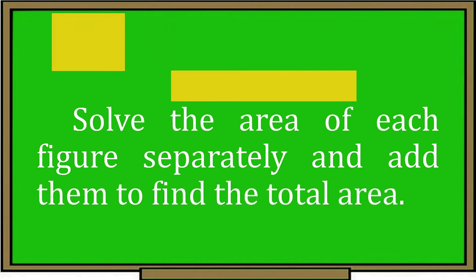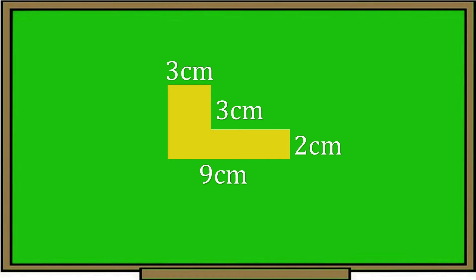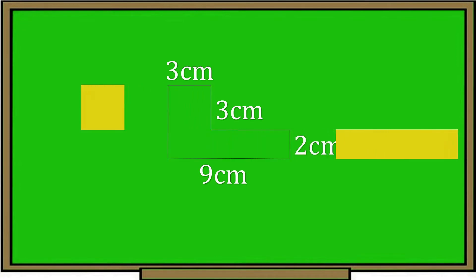Let's try this example. Find the area of an irregular figure with the following dimensions: 3 cm, 3 cm, 2 cm, and 9 cm. To find the area of irregular figures, we need to divide the figure into squares and rectangles. After we have separated the figure, the next thing we do is to find the area of each shape.